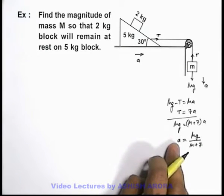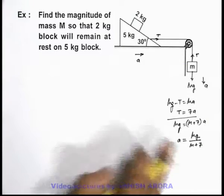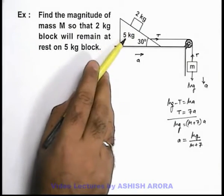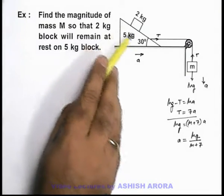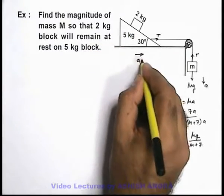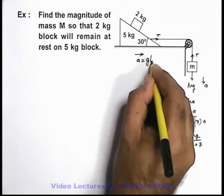And we know very well from the previous example that a block will remain at rest over a triangular wedge or an inclined plane only if it is accelerating with acceleration g tan θ.